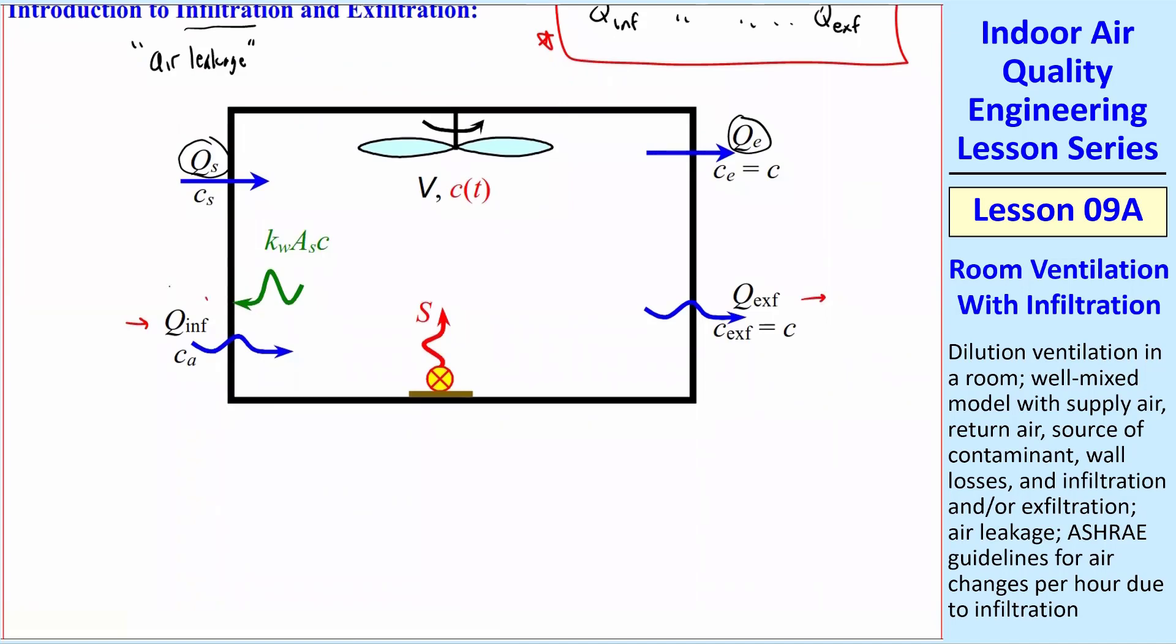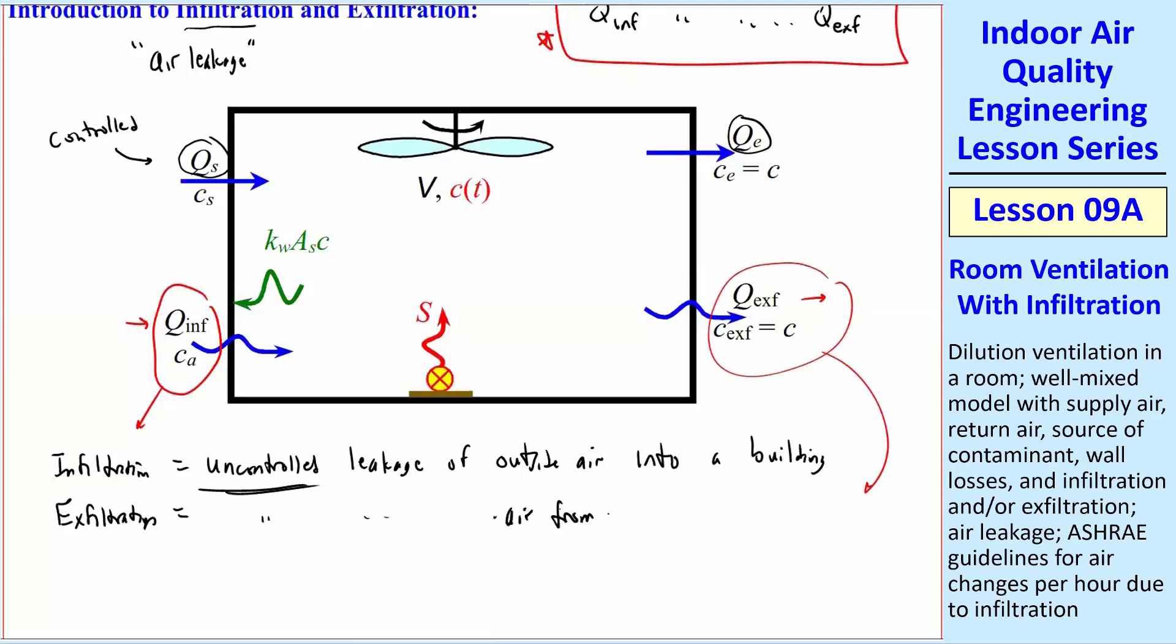Let's look at infiltration first. Infiltration is uncontrolled. Uncontrolled means it's just happening by itself as opposed to the forced ventilation. Infiltration is uncontrolled leakage of outside air into a building. Exfiltration is uncontrolled leakage of air from a room or building to the outside. C_A is the ambient or outside air. So that is what's coming in with infiltration.